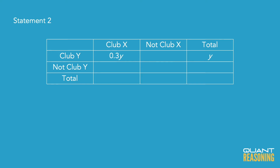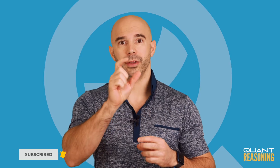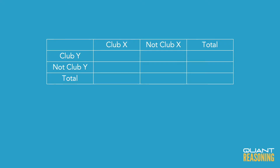Where this gets more interesting is when we combine the statements. What I would do is actually construct a ratio outside of the double-set matrix, specifically for the members of both clubs — that would be the both-and cell of the double-set matrix. I'm going to call it B for both, so B is the number of members who are both members of Club X and Club Y, and I'm going to construct a ratio for each of the statements.